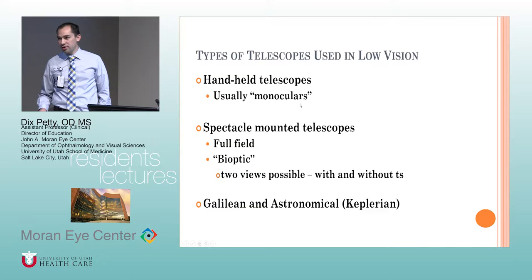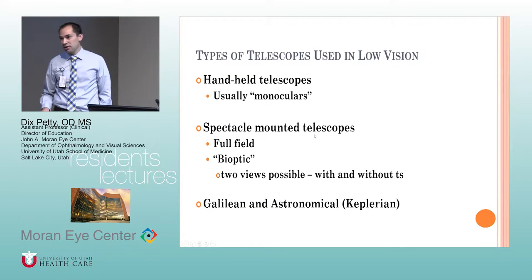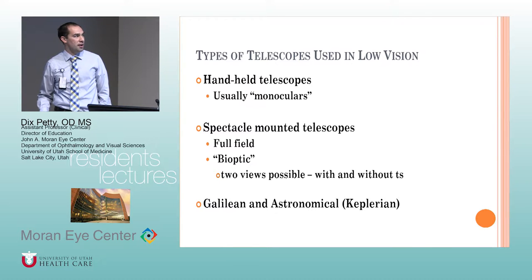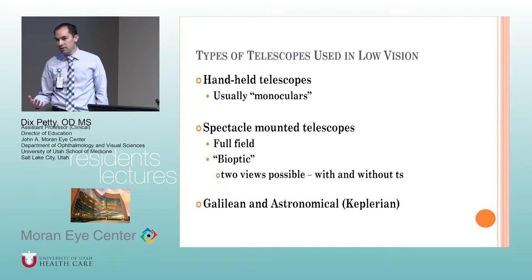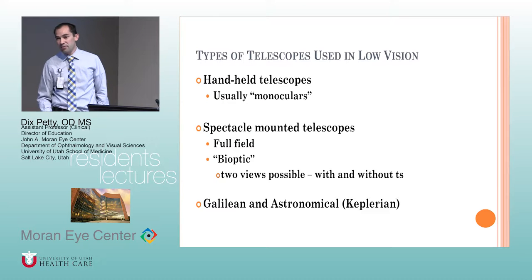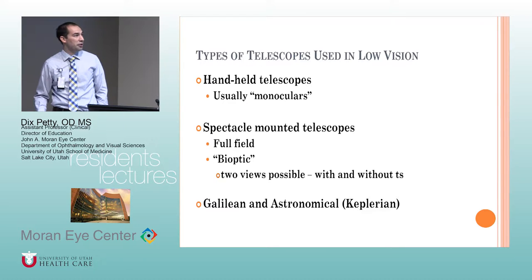Handheld telescopes are usually binoculars. There are also spectacle-mounted telescopes called bioptics — a small telescope mounted inside a pair of glasses. Bioptics allow someone who doesn't meet normal vision requirements for driving to still drive legally. It's a little bit scary, but it works.